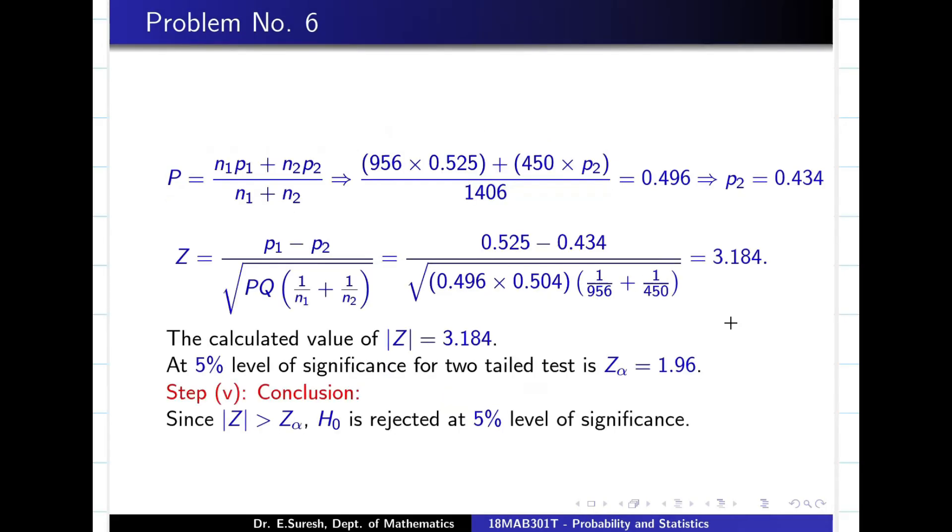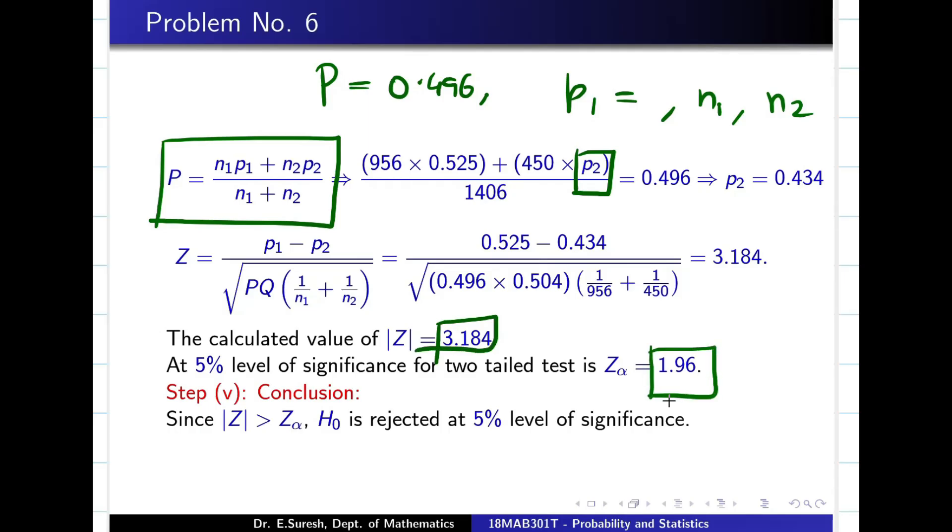Just keep P2 from the equation, then substitute the remaining values 0.22. Once you find P2, then you can go for Z is equal to P1 minus P2 formula, substitute it. Then you can see Z value is 3.1 and then Z alpha value is 1.96. So I can say mod Z is greater than Z alpha value. Mod Z is greater than Z alpha value. So I can reject the H0.